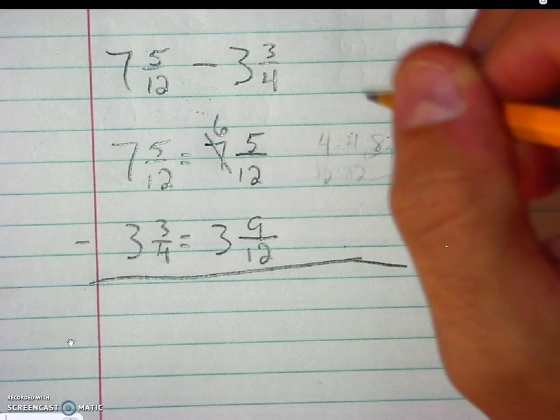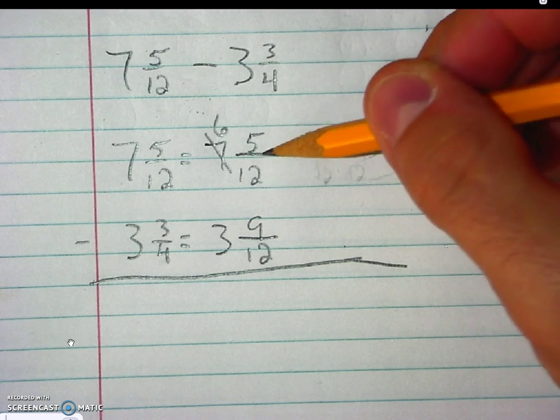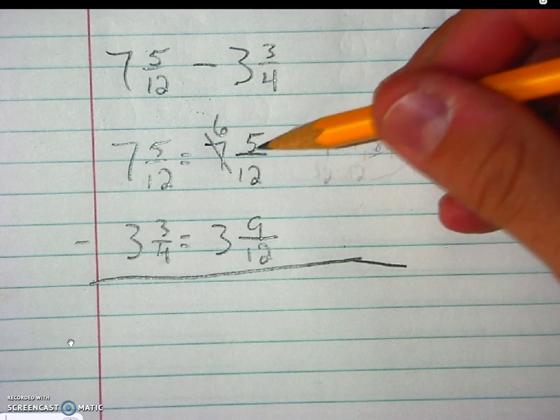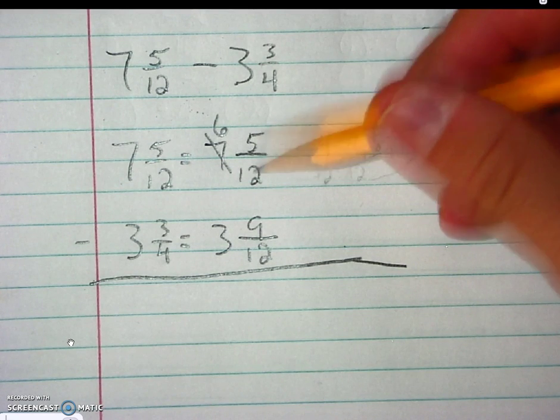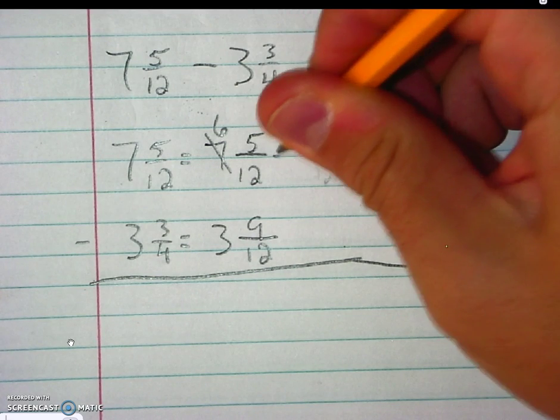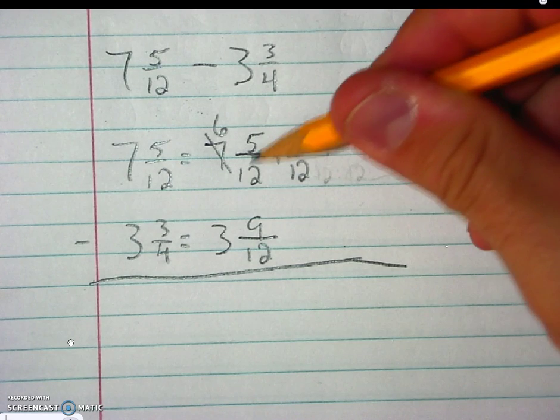Now, I've got one whole that I need to take and put into this fraction. Since I'm already dealing with twelfths, I'm going to put my fraction into this fraction as 12 twelfths. And those two will combine. This is how I add it to the fraction.